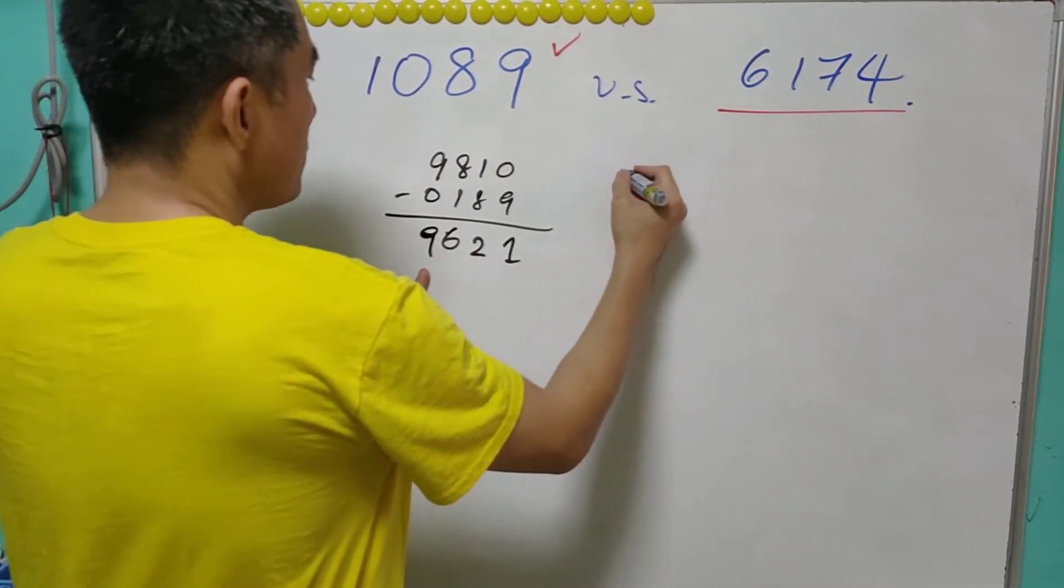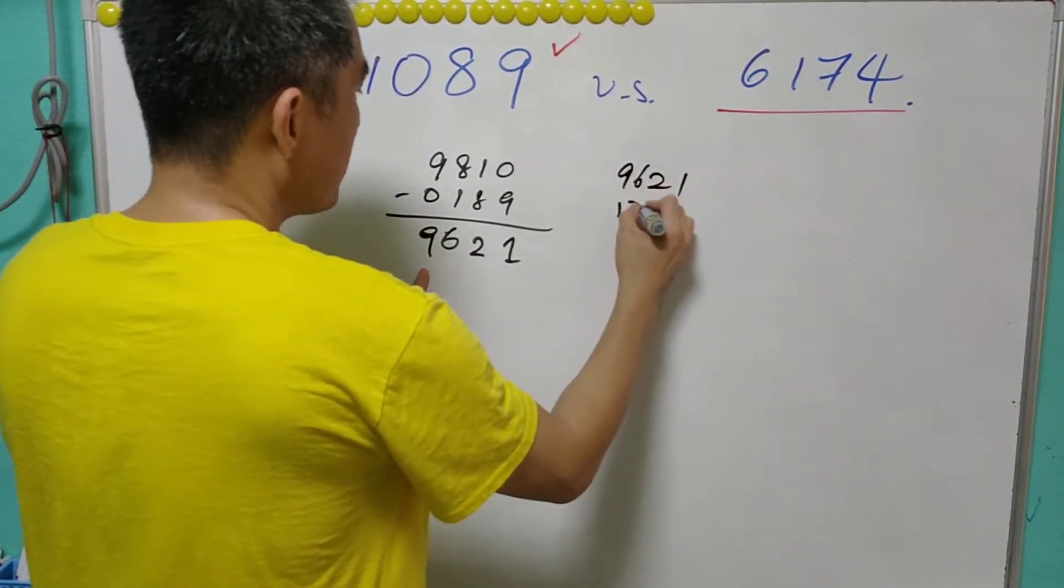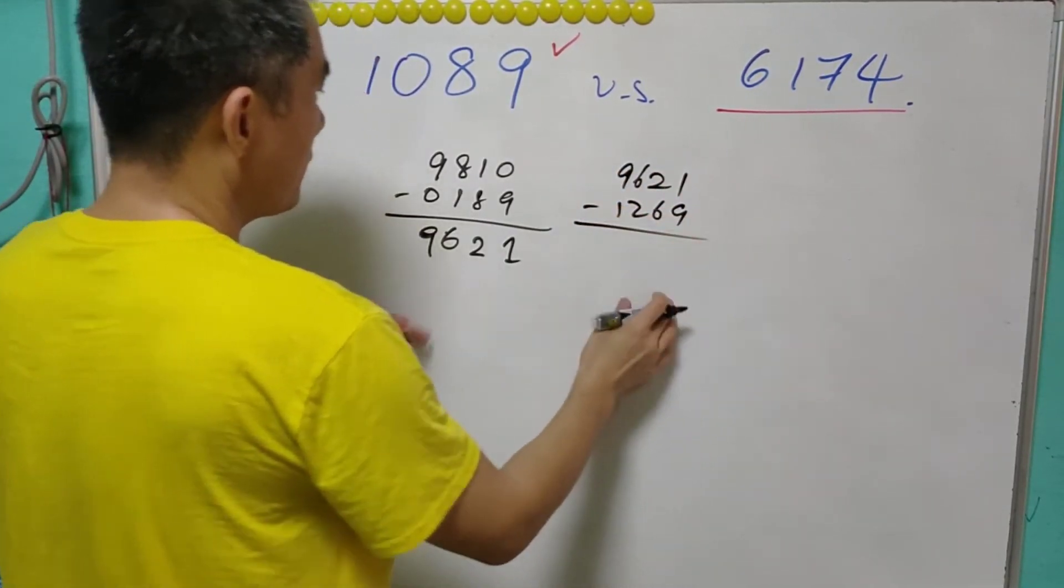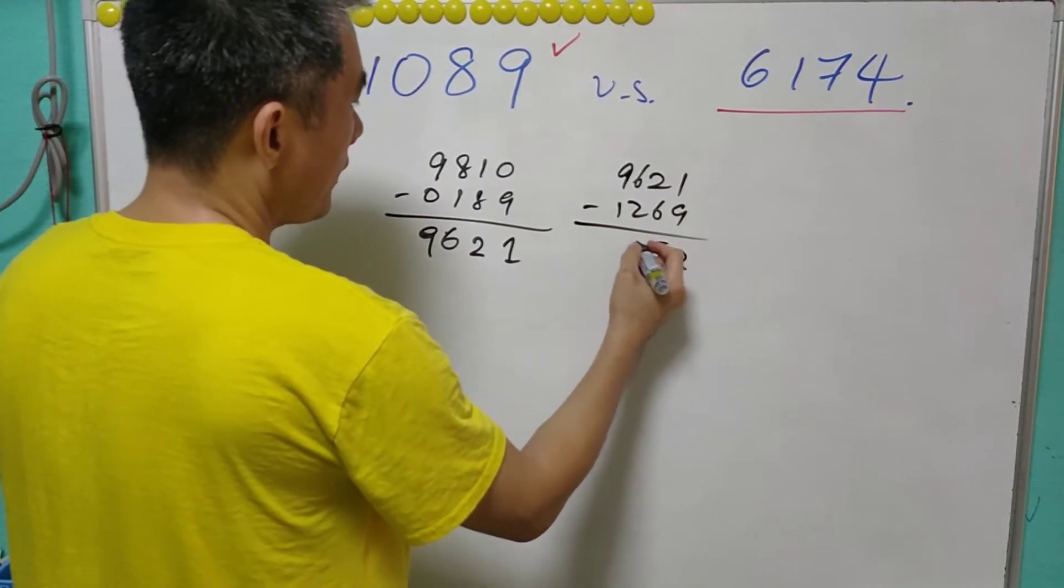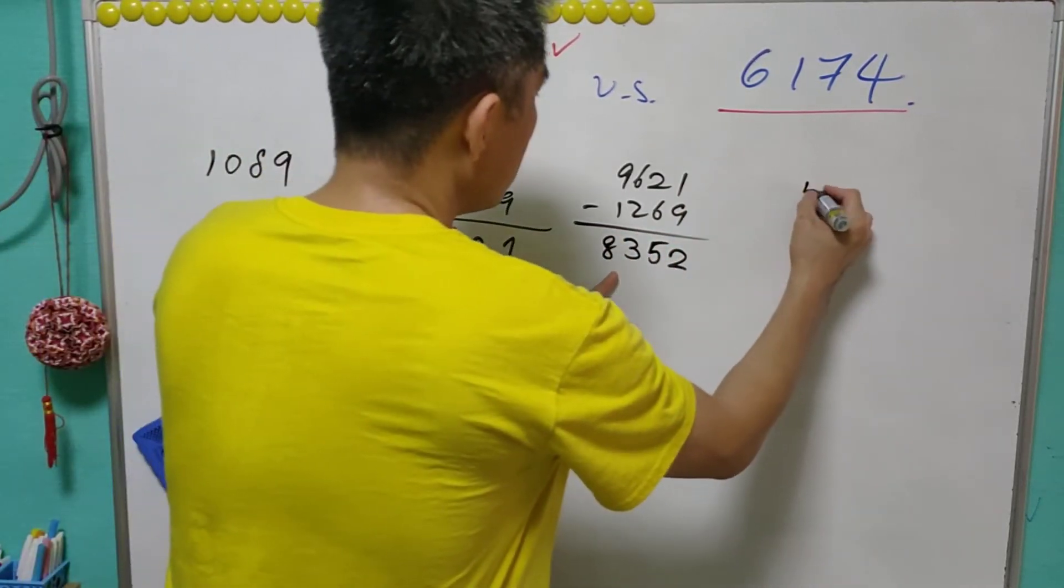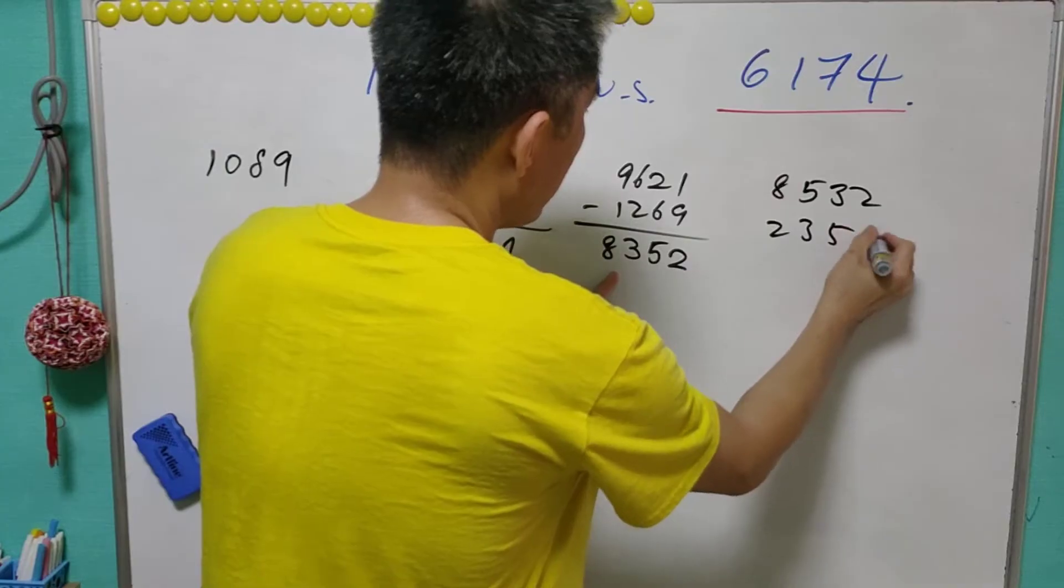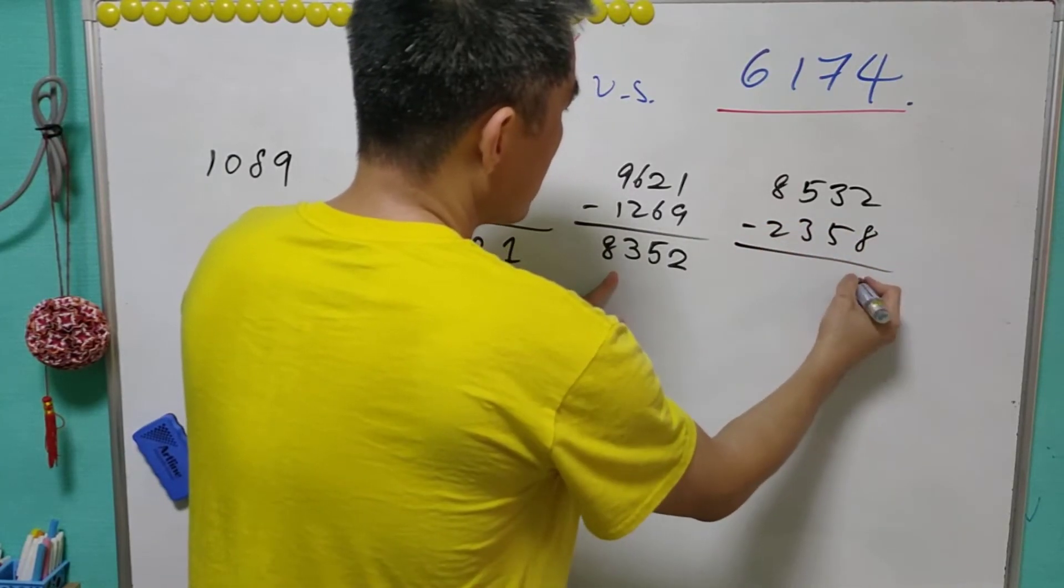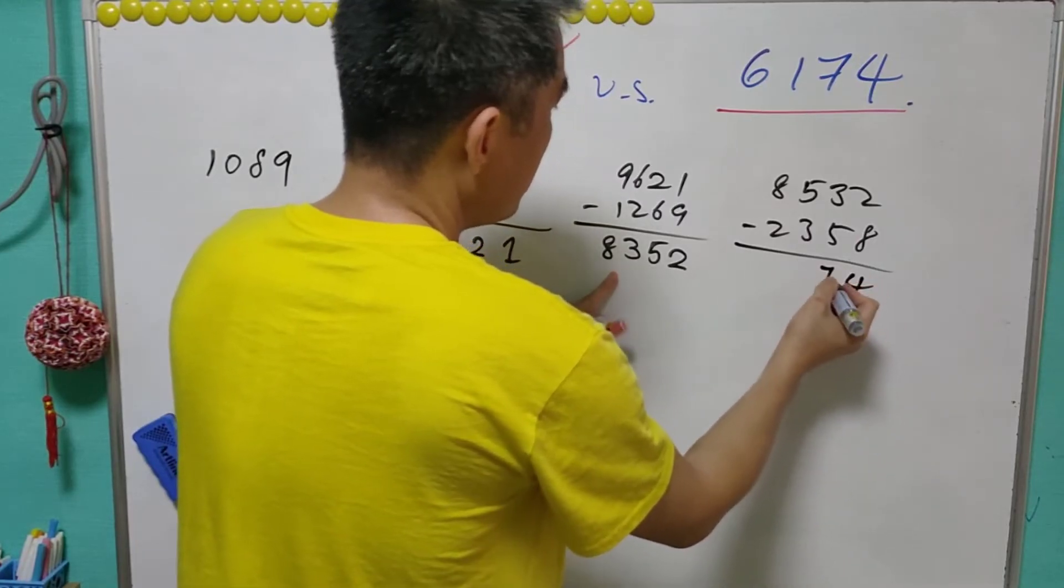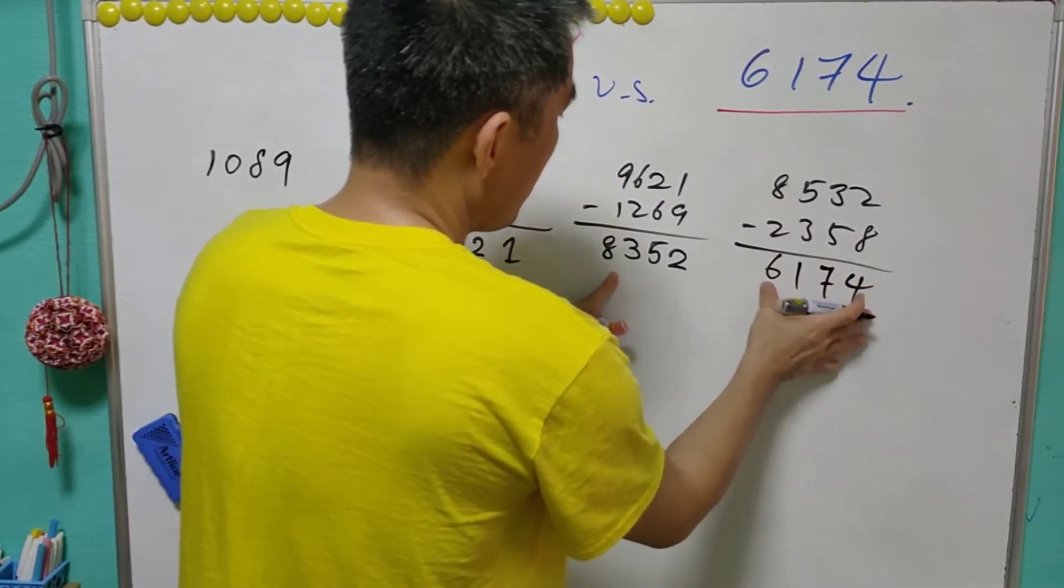We do the same thing again for this newly found number, and we take the difference: that is 8352. And we continue: 8532 minus 2358 gives 6174.